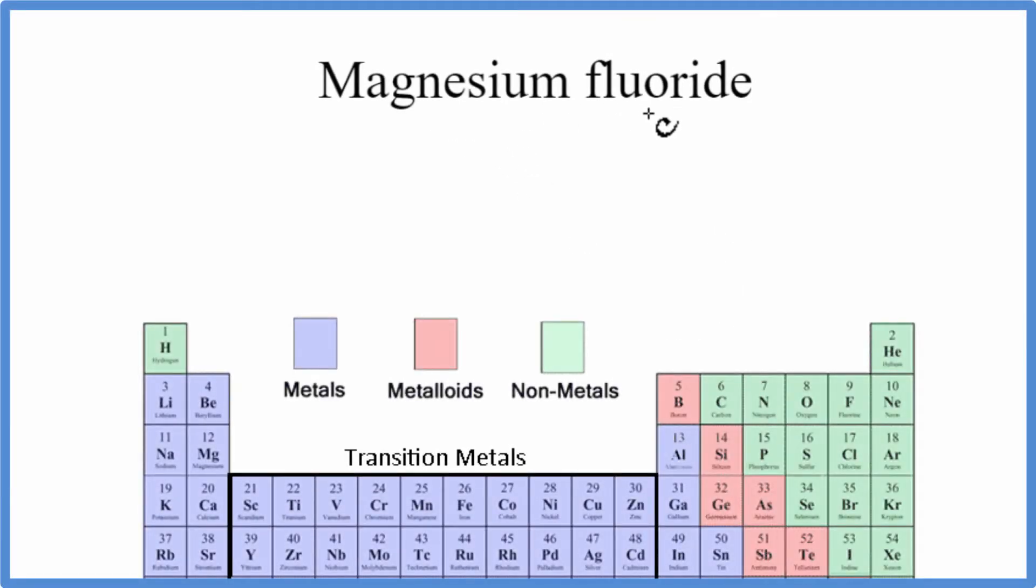To write the formula for magnesium fluoride, we'll go to the periodic table. We can see that magnesium, that's Mg, and the fluoride, that's the fluorine, that's F.